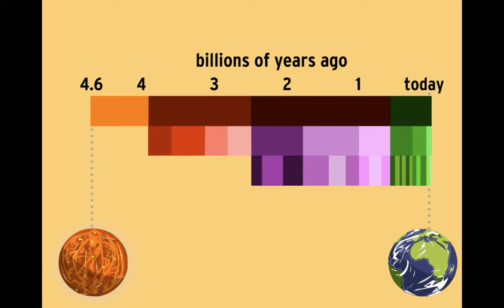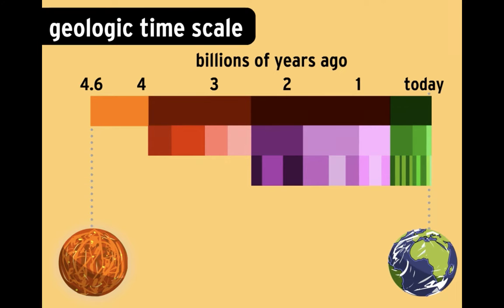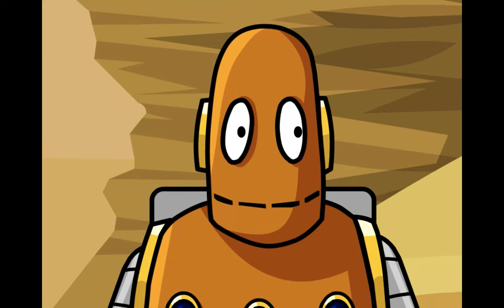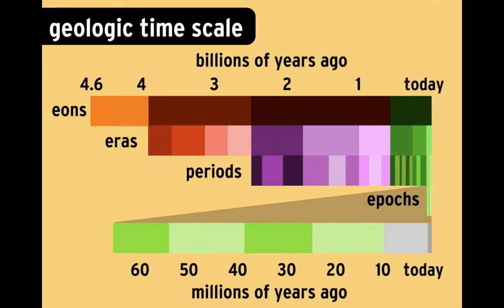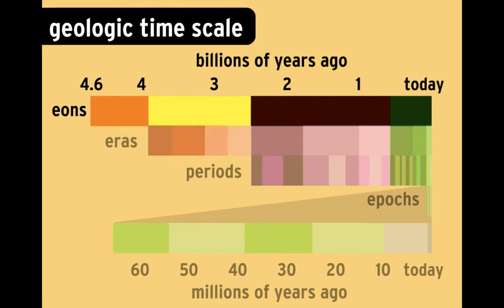This is called the geologic time scale. Instead of millennia, centuries, and years, the geologic time scale is broken up into eons, eras, periods, and epochs. The Earth has had four eons, each lasting hundreds of millions to billions of years.